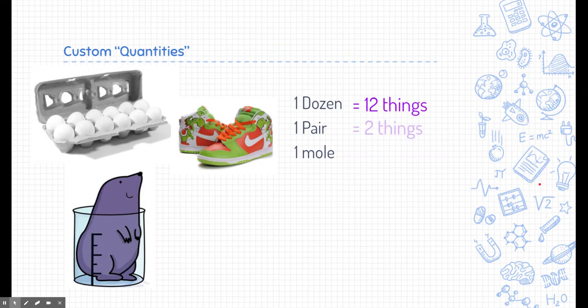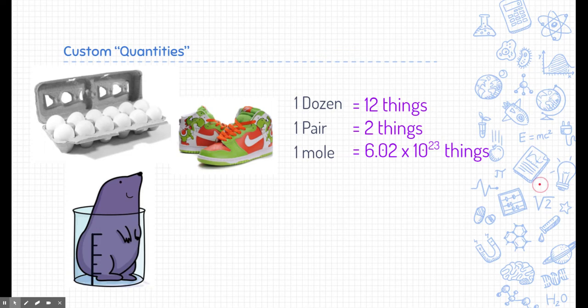What about one pair? Well, you probably know that a pair equals two things, whether that be a pair of shoes, a pair of pants, or a pair of scissors. Now, how about one mole? This isn't a quantity you're used to — you don't automatically think of a number. But if you were to mention this to a scientist, especially a chemist, they would know that a mole of things represents 6.02 times 10 to the 23rd number of things.